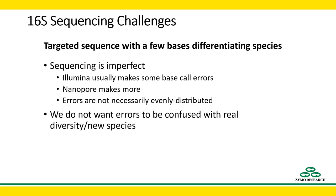There are a few challenges that come with this identification method. Sequencing is imperfect, and Illumina and other platforms make some base call errors, with their rate and nature being dependent on the specific platform and read length being done. Most importantly, we do not want to identify new species or determine our sample's diversity based upon sequencing errors. Sequences or anything else generated by our techniques that is not actually from our sample is often referred to as artifact.